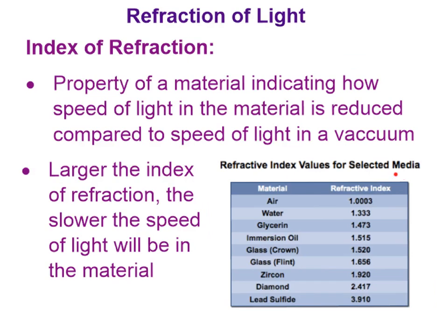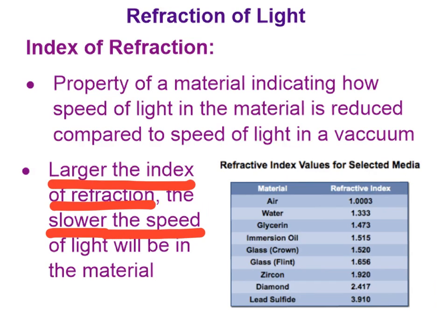Here is a chart indicating different materials and their refractive indices. The larger the index of refraction, the slower the speed of light will be in that material. We can see that in air, light is going to travel fairly fast, and increasingly down this list, light will travel slower and slower because these indices of refraction get larger.